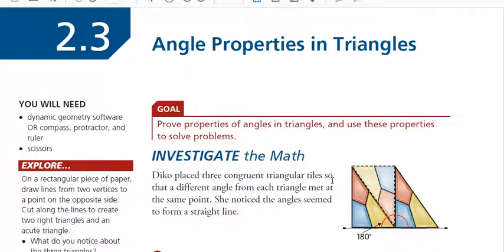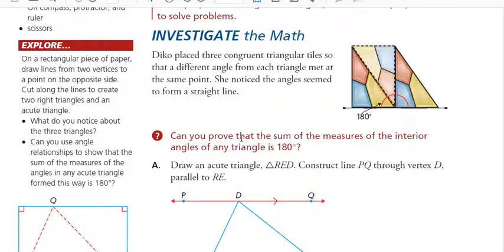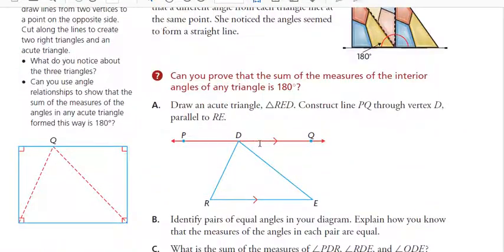Section 2.3 is entitled Angle Properties in Triangles. The Investigate the Math asks: can you prove that the sum of the measures of the interior angles of any triangle is 180 degrees?